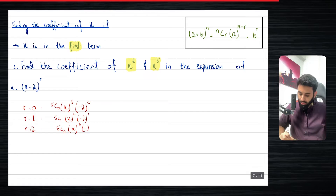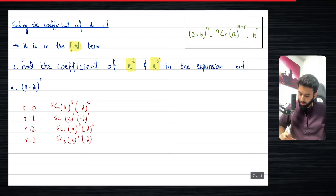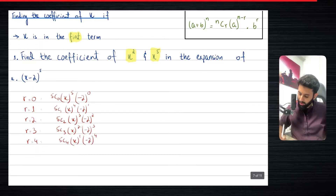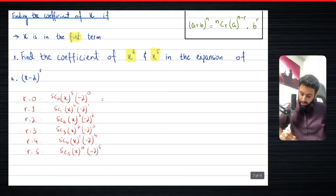Then 5C2, x to the power 3, (−2) to the power 2. Then r equals 3: 5C3, x to the power of 2, and (−2) to the power of 3. Then r equals 4: 5C4, x to the power of 1, and (−2) to the power of 4. And finally, r equals 5: 5C5, x to the power of 0, and (−2) to the power of 5.